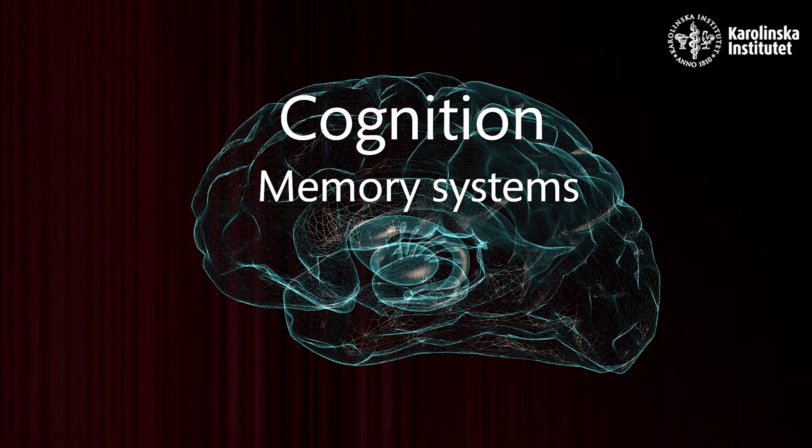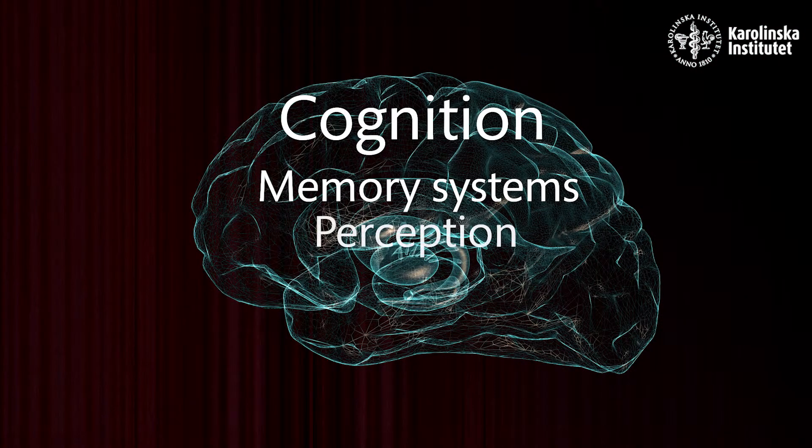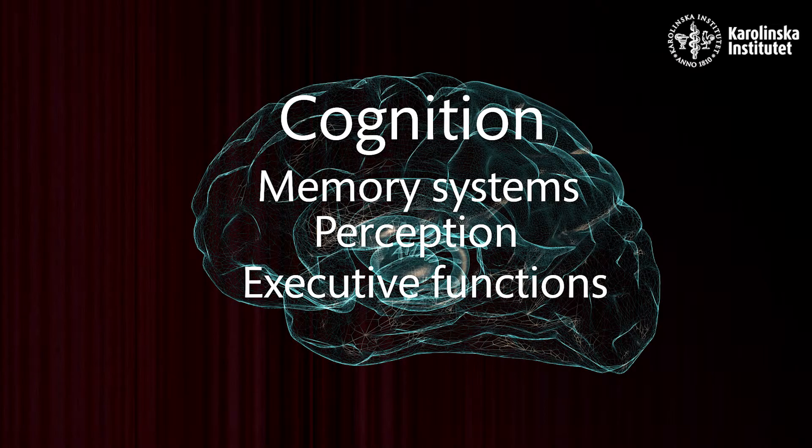Broadly speaking, there are three groups of cognitive functions: the memory systems, perception, and the executive functions. The memory systems make us intelligent. Without memory, we would only be like a disconnected screen, registering what is going on without being able to compare it to anything, understand it, or remember it when it leaves our sight. We wouldn't be able to learn or make predictions about the future.